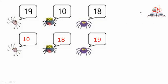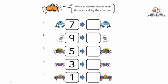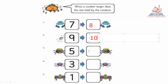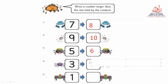Excellent! Let's continue. Write with me please. We have: write a number larger than the one held by the creature. It means we have number seven — what is the larger number than seven? Eight, good job! What is the larger number than nine? Ten. What is the larger number of five? Six. What is the larger number of three? Four! Good job. What is the larger number of one? Two, good job!